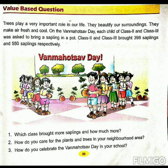On the Van Mahotsav day, each child of class 2 and class 3 was asked to bring a sapling in a pot. Now what is a sapling? A sapling is a baby plant. Class 2 and class 3 brought 398 saplings and 550 saplings respectively.